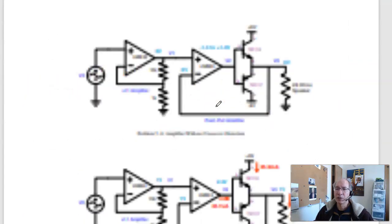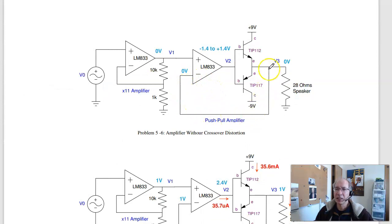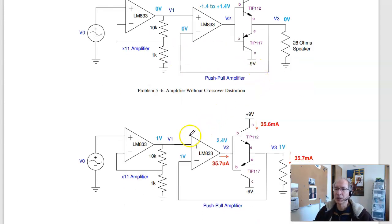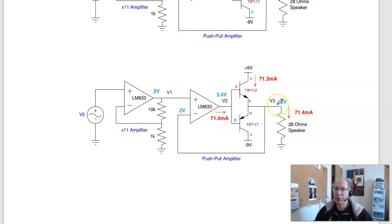That's what this circuit does. If I do a very minor modification, take the minus and connect it to the speaker, that eliminates the crossover distortion. So now when the input is 0, the output is 0. When the input is 1 volt, the output is 1 volt. When the input is 2 volts, the output is 2 volts.